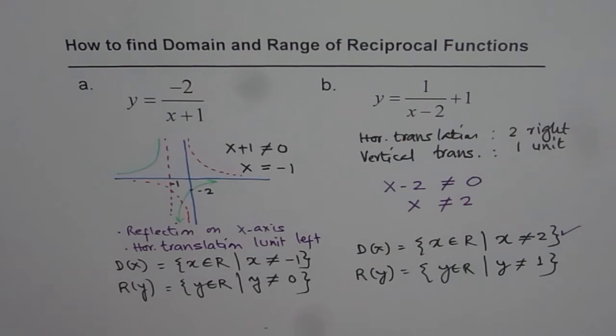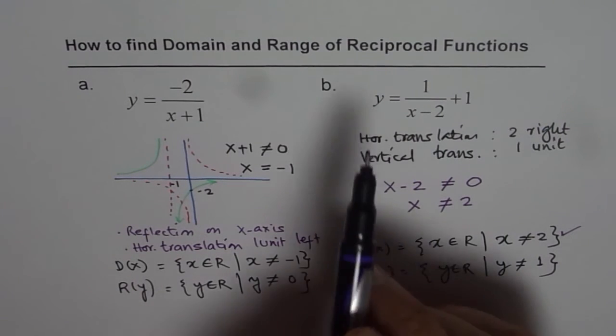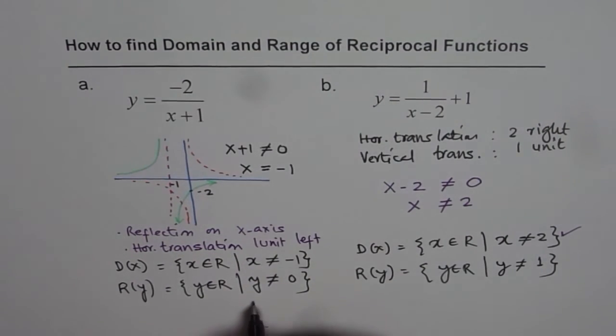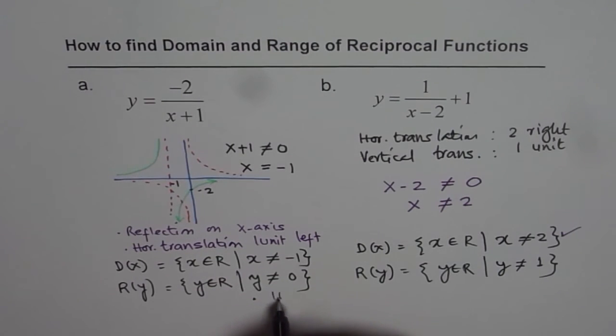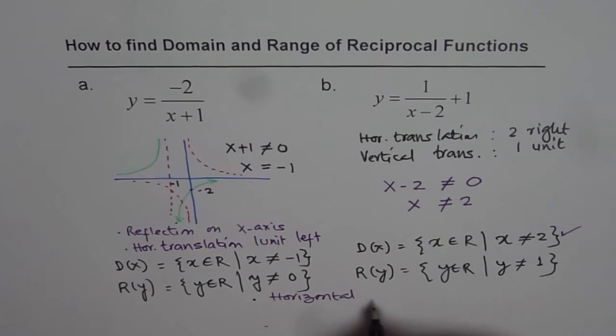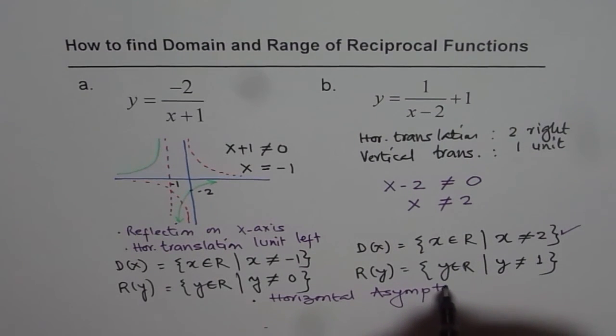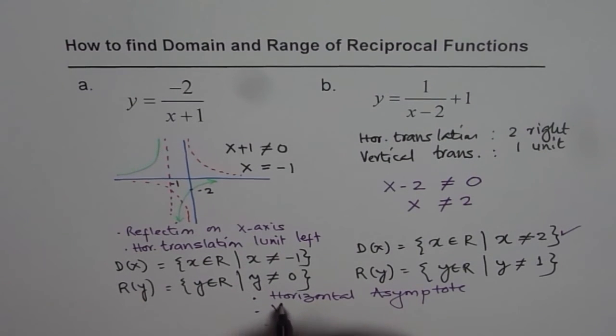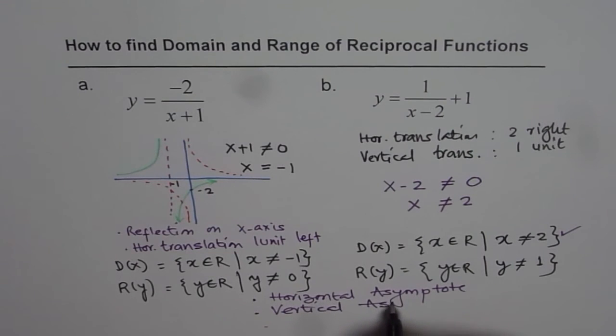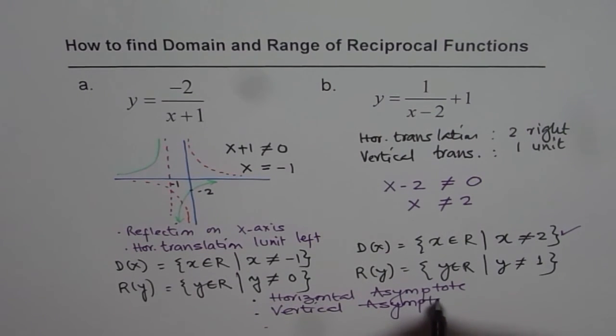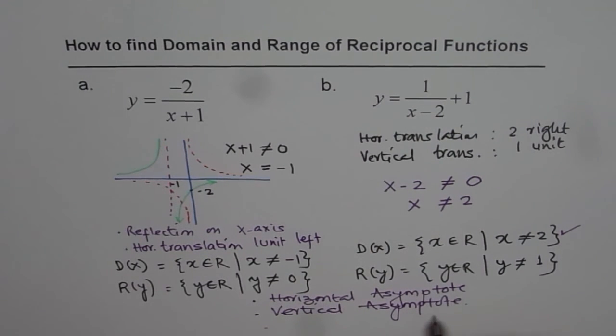But the important criteria here to remember is that reciprocal functions will always have two things: horizontal asymptote and vertical asymptote, which gives you these restrictions. So figure out horizontal and vertical asymptotes.